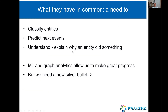What these use cases all have in common is you always want to know: how do I classify this patient, telephone customer, or aircraft? Can I predict the next event — will a patient get into trouble, or an aircraft? What is the next thing a telecom customer calling your call center will call about? And you want to understand and explain why the entities did something. We do all kinds of graph analytics and machine learning to help with those questions, and they work fantastically. But because we live in the world of graphs, we need a new silver bullet — and for the last two years, one of the most exciting things in data science has been graph neural networks.